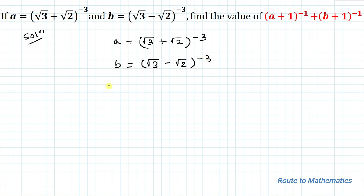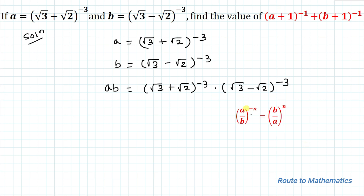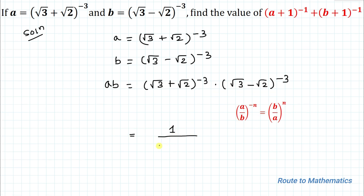Our first step is to find the value of a×b. That is (√3 + √2)^(−3) multiplied with (√3 − √2)^(−3). Now applying the exponential rule: (a/b)^(−n) = (b/a)^n — meaning by doing a reciprocal, the negative power becomes positive. Applying this, we get 1/(√3 + √2)³.